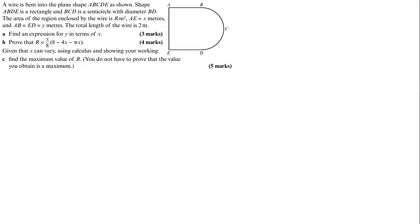I'm going to go through the steps here, so I'm going to read the question. A wire is bent into the plane shape ABCD as shown. Shape ABDE is a rectangle and BCD is a semicircle with diameter BD. The area of the region enclosed by the wire is R metre squared. It also tells me AE is x metres and AB is y metres. The total length of the wire going around the shape is 2 metres.